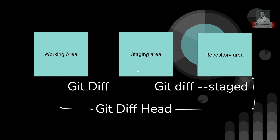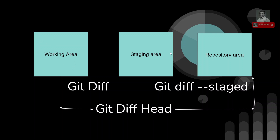As we already learned in previous videos, git has three states: the first one is the working area, the second one is the staging area, and the third one is the repository area.